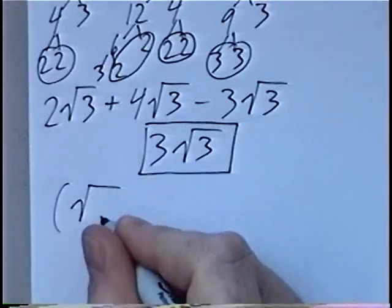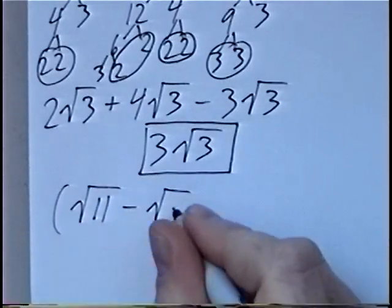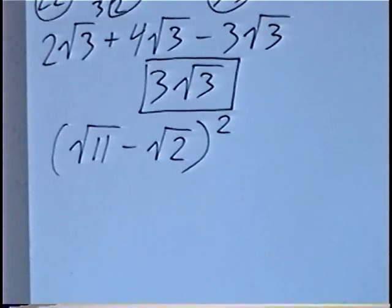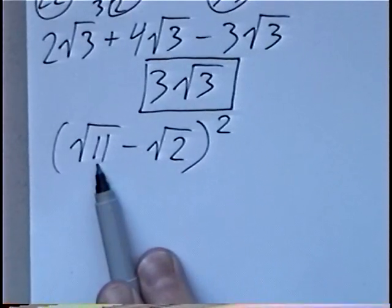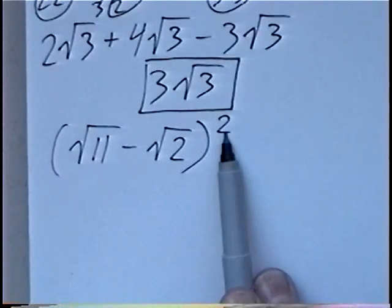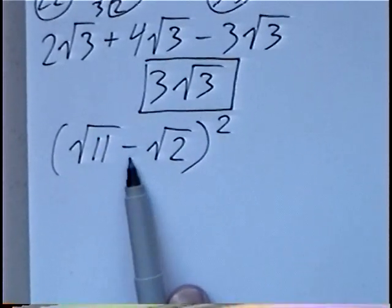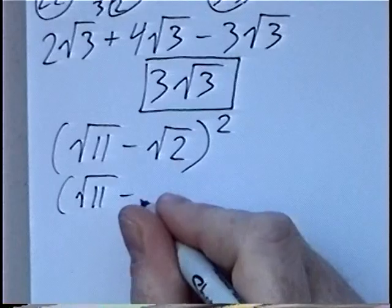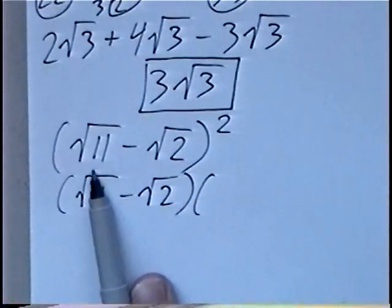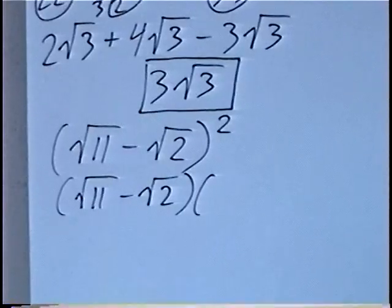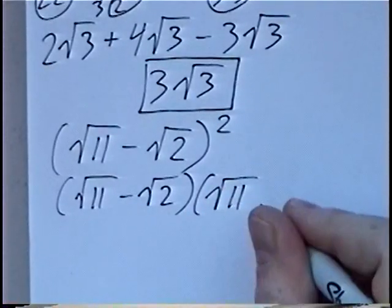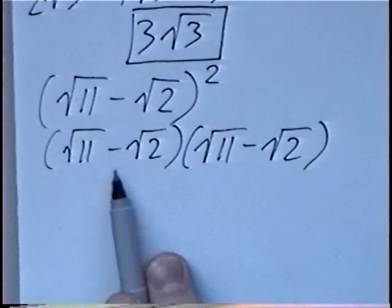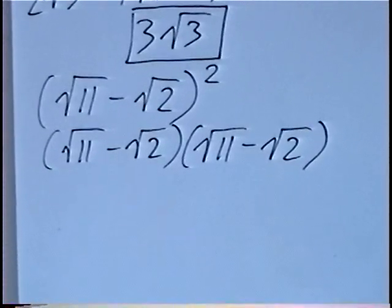The next question is the quantity radical 11 minus radical 2, raised to the second power. We cannot add or subtract radicals with different numbers. The squared outside the parenthesis does not distribute inside when we have a binomial with a plus or minus sign. Instead, the square means we write the same parenthesis twice: radical 11 minus radical 2, times radical 11 minus radical 2. Having two binomials, we can multiply using FOIL.